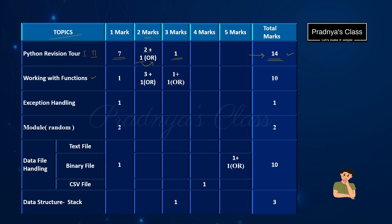Let's check out the next topic that is Working with Functions. You will be getting one question for one mark and there are total 4 questions for two marks. Here also you have choice for one question. In the 3-mark section, you will be getting two questions, and here also you have choice for one question. If we look at the total marks allotted to this topic, we can see it is 10.